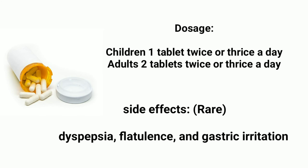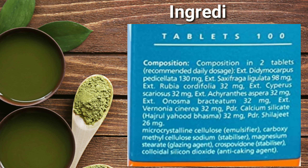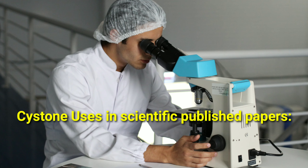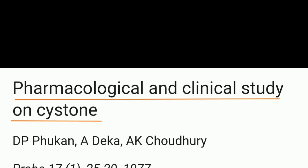Side effects: Dyspepsia, flatulence, and gastric irritation. Ingredients: Didymocarpus pedicellata 130 mg, Saxifraga ligulata 98 mg, Rubia cordifolia 32 mg, Cyperus scariosus 32 mg, Achyranthes aspera 32 mg, Onosma bracteatum 32 mg, Vernonia cinerea 32 mg, Hajrul Yahud bhasma 32 mg, Shilajit 26 mg.